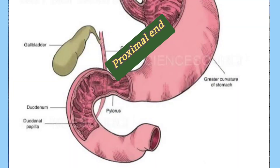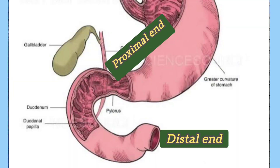Before that, you have to identify the proximal end and distal end before holding the duodenum in anatomical position. Proximal end means the end towards the pylorus, and distal end means the end towards the jejunum. So I have to identify the two ends first, then the anterior and posterior side, lateral side and medial side.